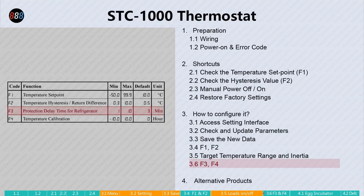F3 is the protection time to delay the compressor start. If your refrigeration unit starts and stops frequently in a short time, the compressor will be more easily damaged. F4 is used to correct the measured temperature.